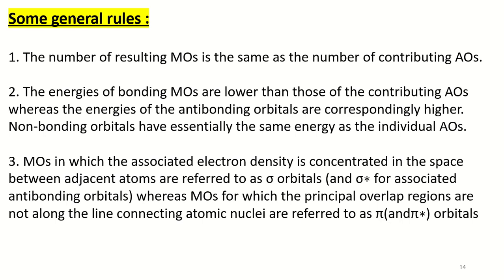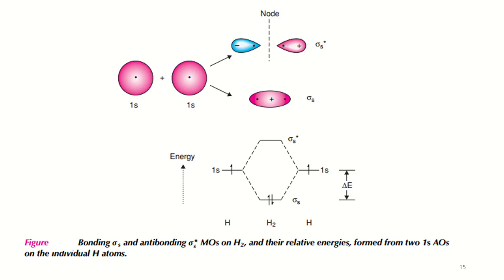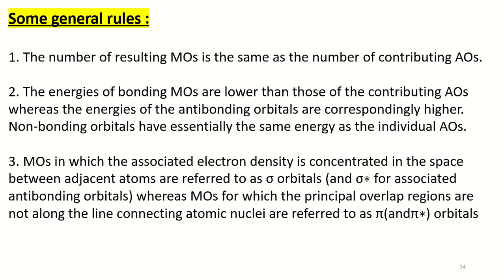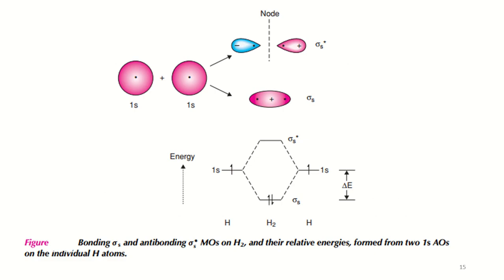Molecular orbitals in which the associated electron density is concentrated in the space between adjacent atoms are referred to as sigma orbitals, whereas molecular orbitals for which the principal overlap regions are not along the line connecting atomic nuclei are referred to as pi orbitals. Before considering covalent bonding in solids, it is very useful to consider bonding in some small molecules.